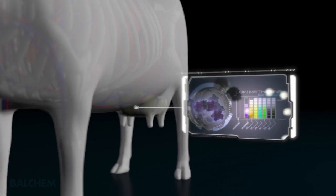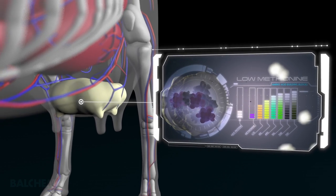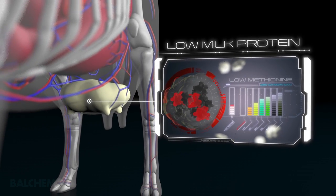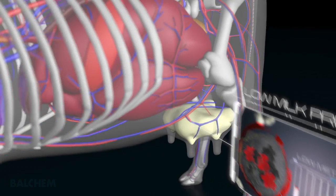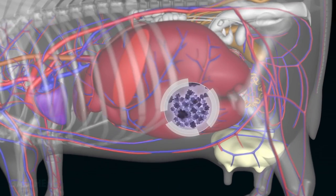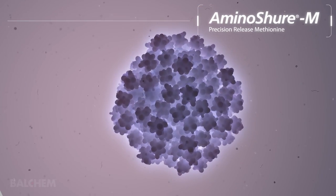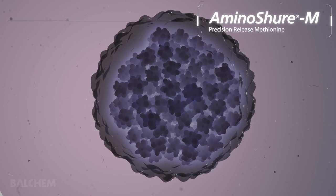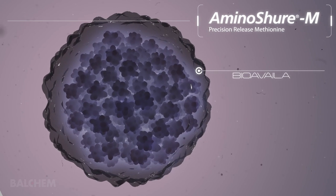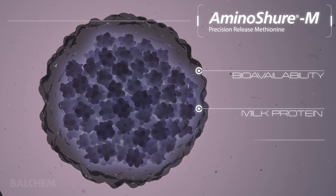At Balchem, we understand dairy nutrition and we understand the economic challenges of the modern dairy farmer. Supplement your cow's methionine requirement with Aminosure M precision release methionine and help them build more milk protein and your bottom line.